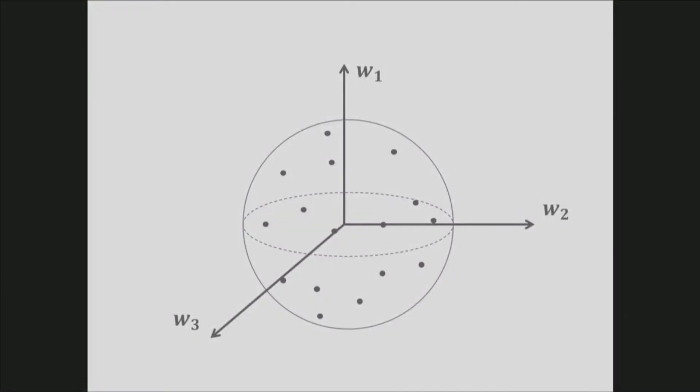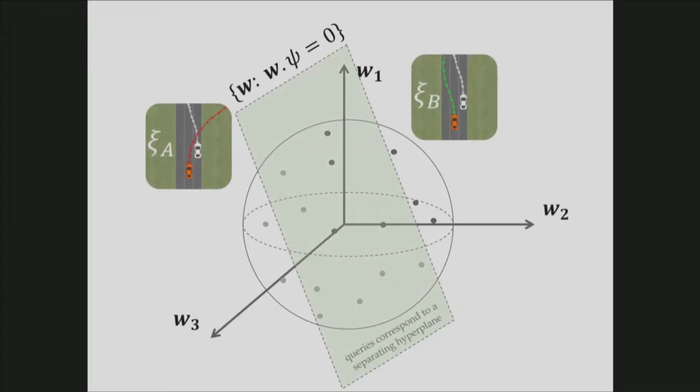Let me give you an example. Let's say w lies in a three-dimensional space. So we only care about the sign of w·ψ. This means we can scale w with any positive constant. And this also means we can assume w lies in the unit ball. And without any prior information, each w sample is equally likely.